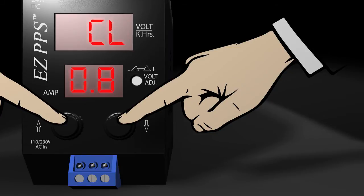Pressing both buttons simultaneously will allow you to set the current limit. Press up or down to change the value, then press both buttons again to finish.